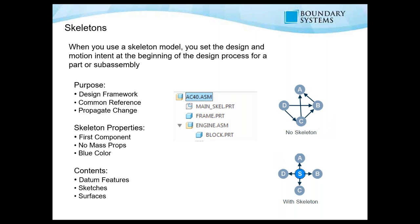If you change the skeleton model, everything that's linked to it will update as well. The two pictures on the right-hand side are a perfect example. When you use a bottom-up approach and you just jump into a new product and start designing the assembly, you get cross-references. At some stage, you change a certain part and then something else updates, and if you start working with a large number of sub-assemblies, it becomes a little bit of a nightmare to control. It's fine for the first round, but as soon as you're making changes, it becomes a problem.